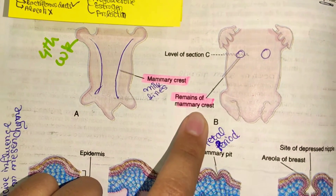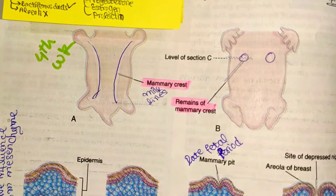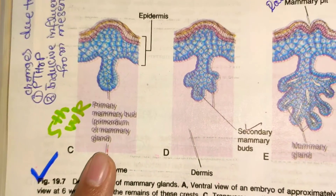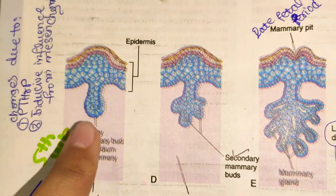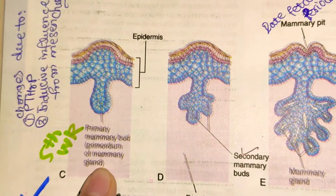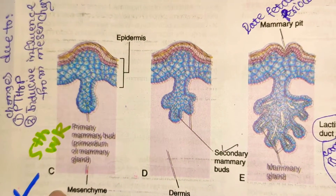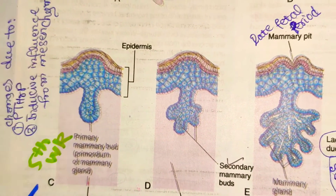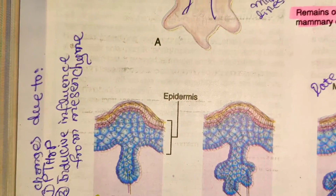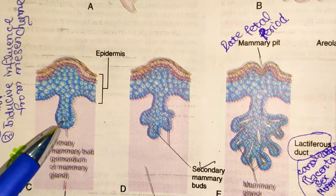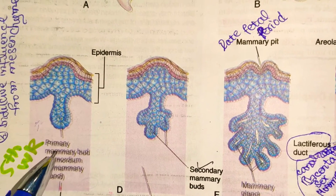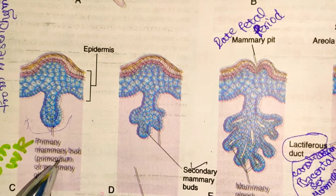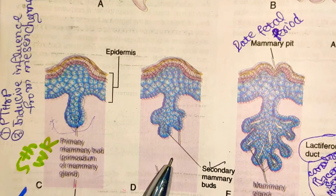The remains of the mammary crest persist in the region where the breast is to develop in the future. In the fifth week, primary mammary buds form. This structure shows epidermis on the outside and mesenchyme below. The epidermis undergoes involution into the mesenchyme — this is the primary mammary bud.